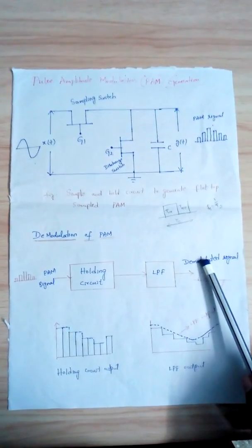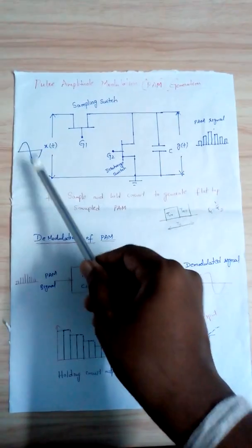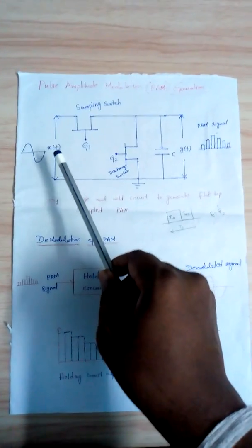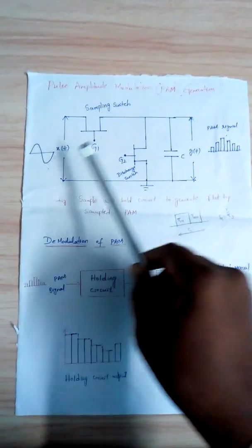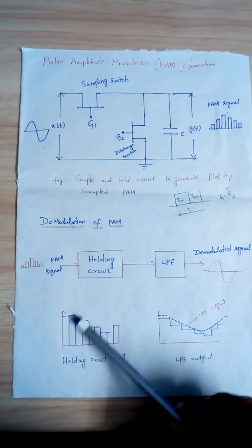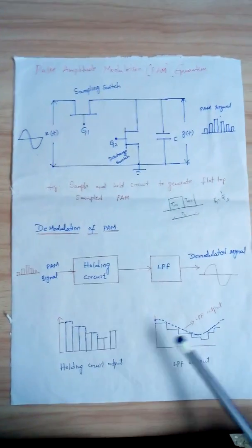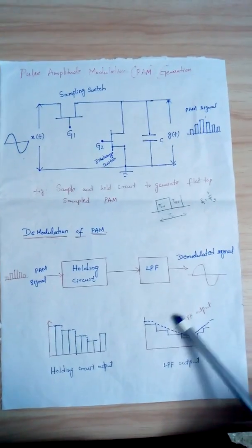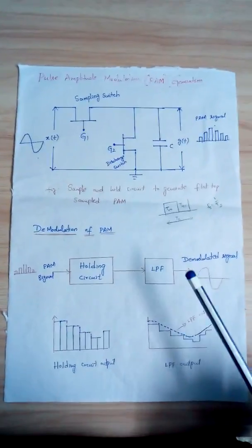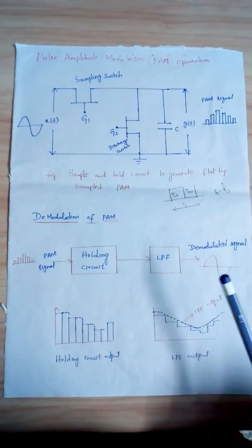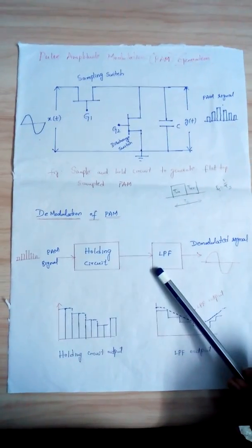The output of the holding circuit passes through the low pass filter, which reduces distortion. Finally, we get the demodulated signal — the same signal that was sent during generation. The dotted line in the diagram represents the low pass filter output. This covers the generation and detection of the PAM signal.